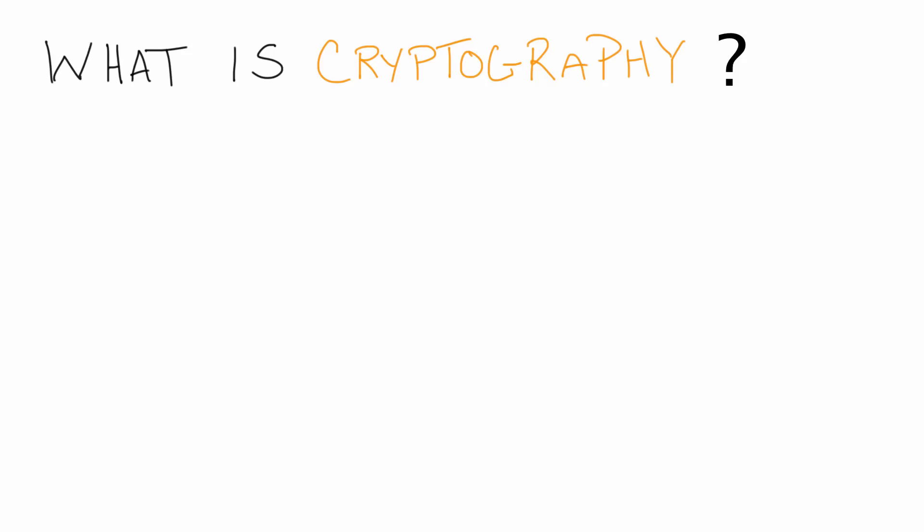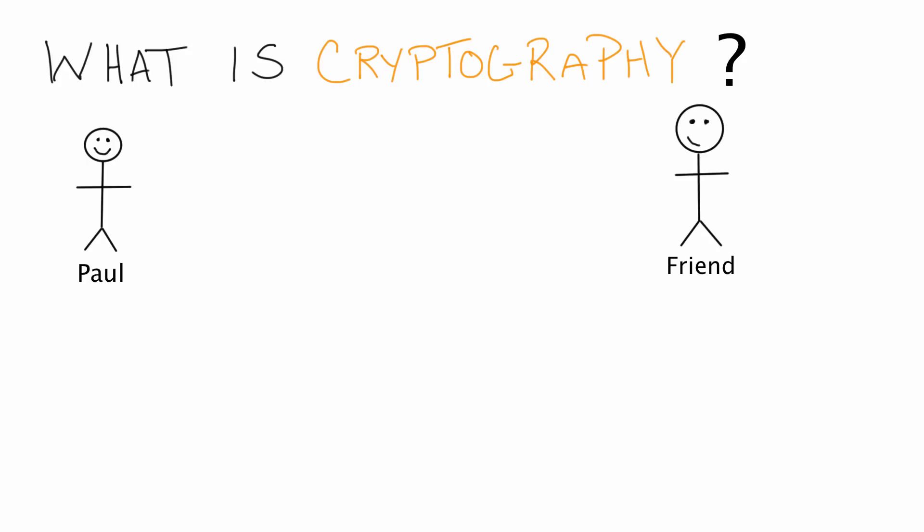So let's say that we've got some person — let's just go ahead and name this person Paul, since that's a pretty neat name. And then let's say that Paul has a friend. Let's pretend like Paul and his friend are on different sides of the world, but Paul has an important message to send his friend. But because Paul is on the other side of the world, he can't just hand his friend this message. So now let's pretend like this message that Paul has has some secret information that he only wants his friend to know about and nobody else.